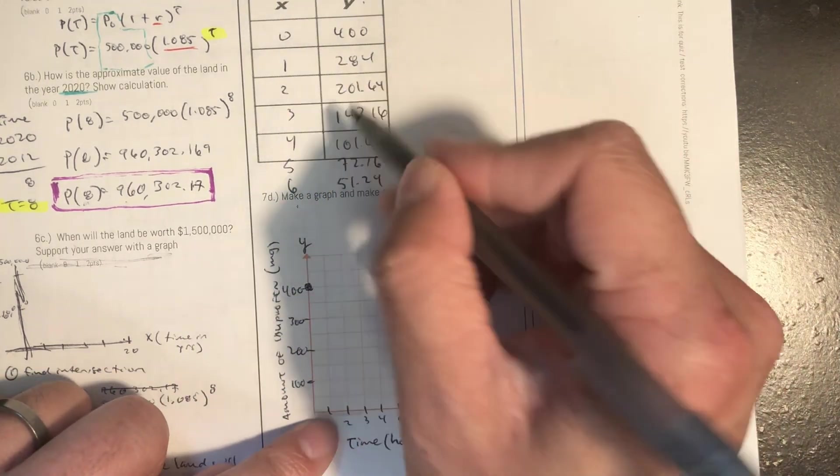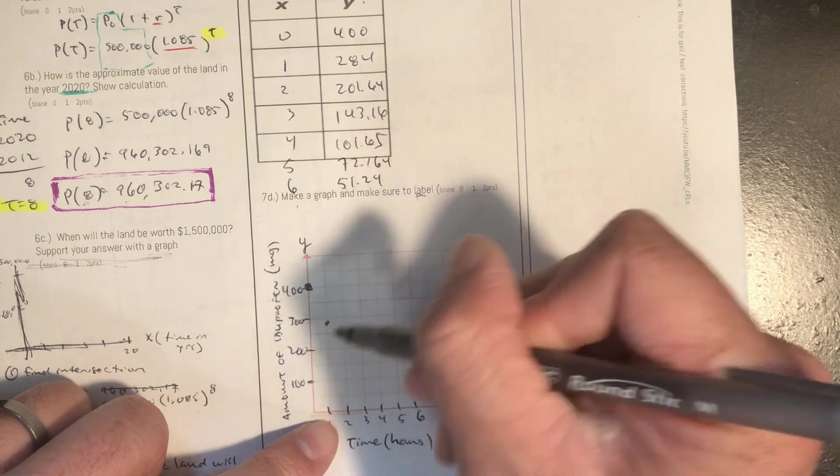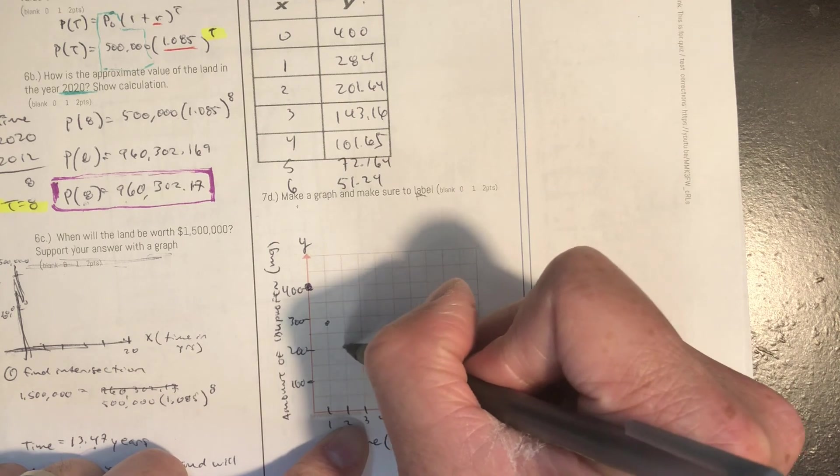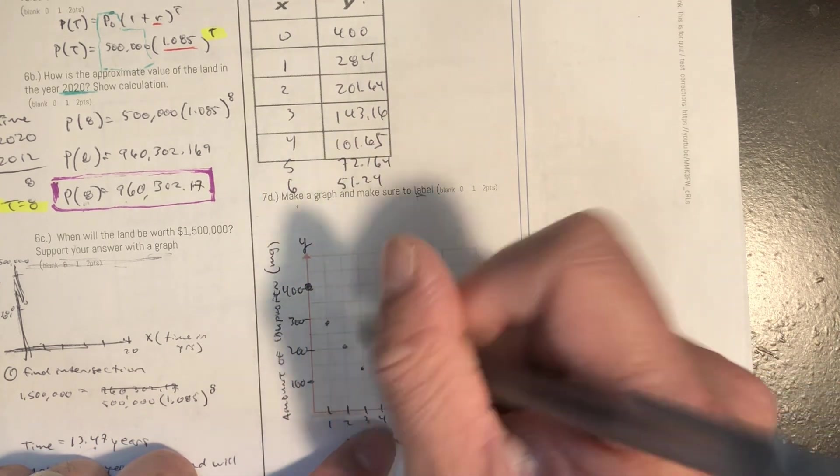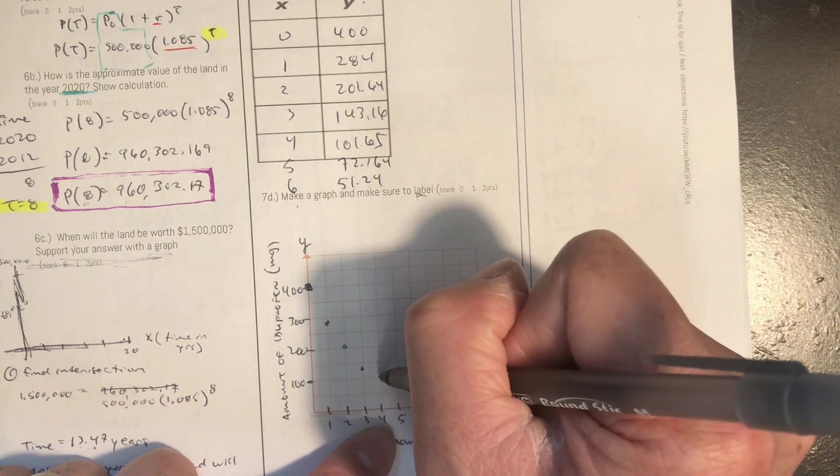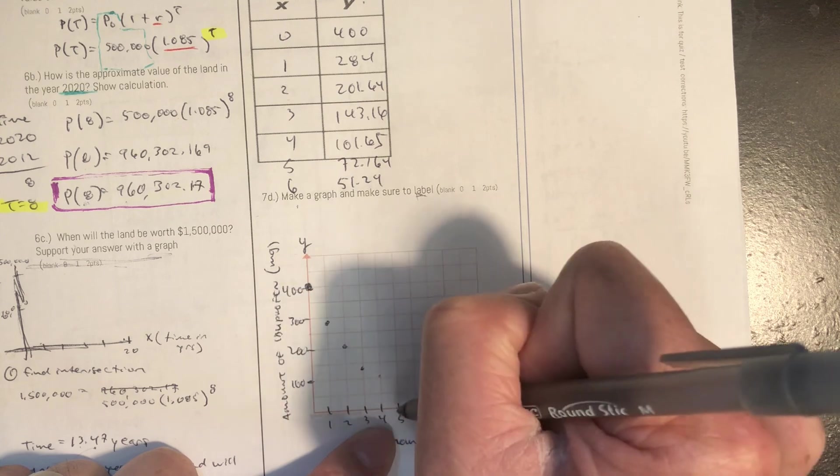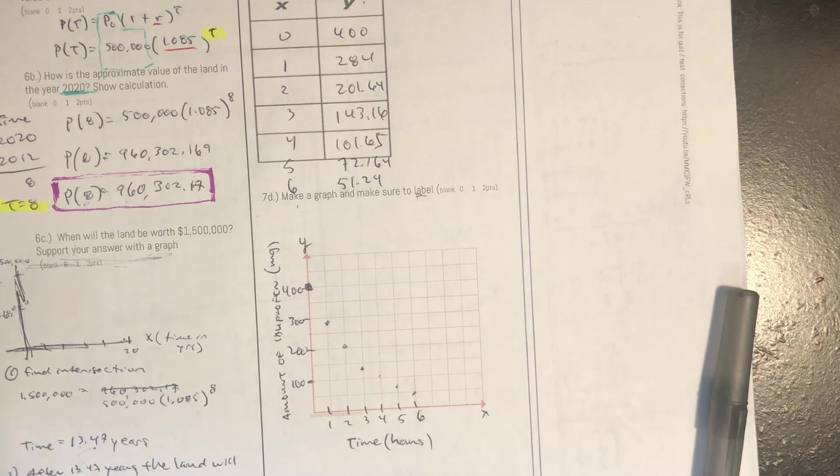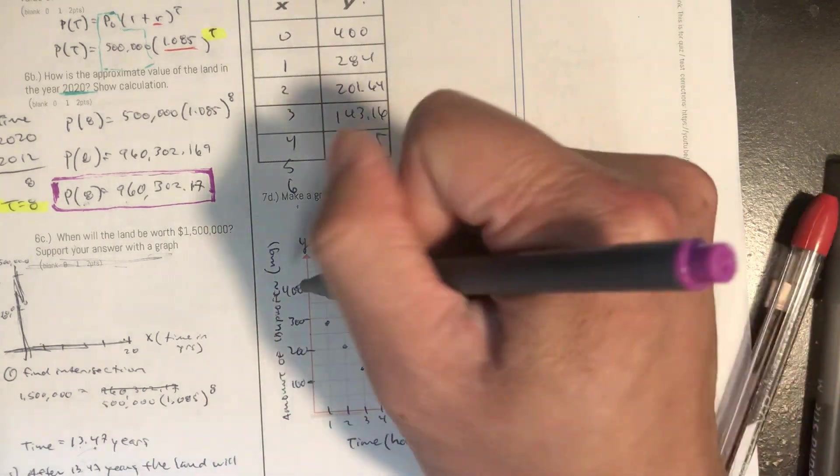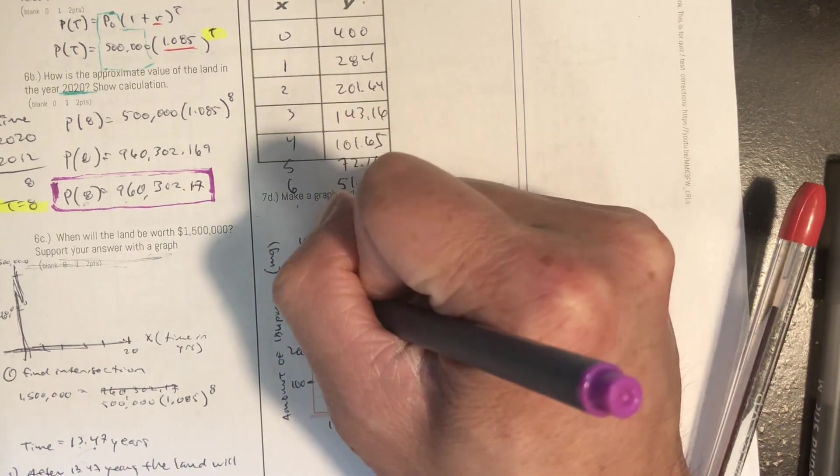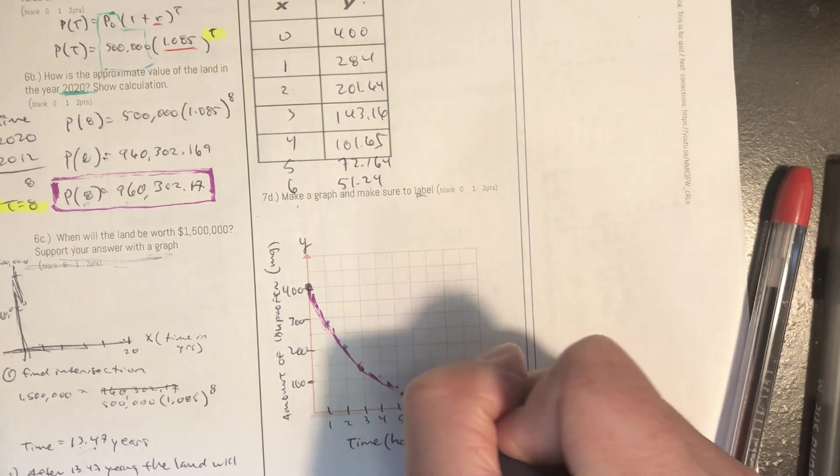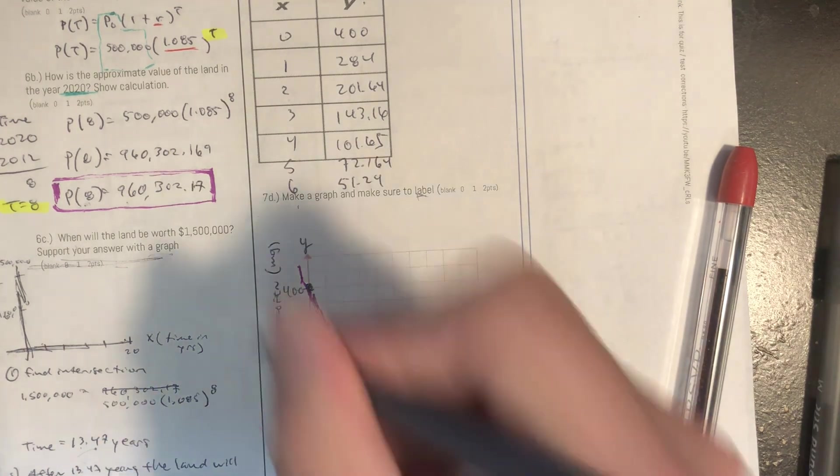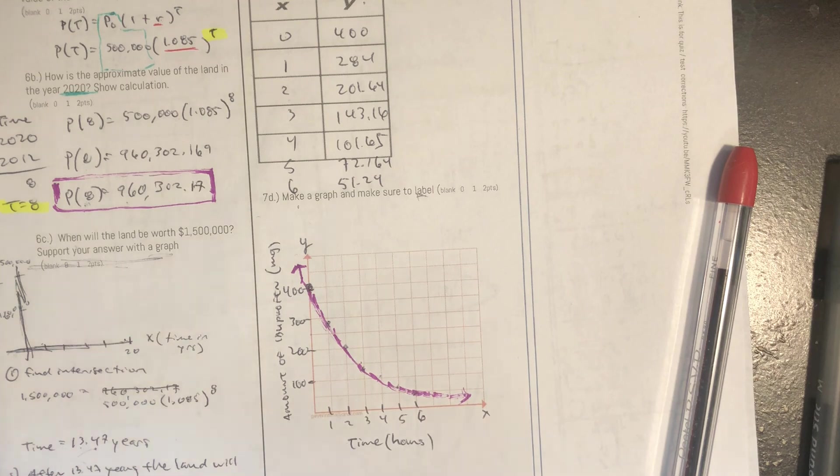So we have at 0, 400. 1 at 284. Remember, those are 50s. 2 and 200. 3 and 143. 4 and 101. 5, 72, and then 6, maybe around 50. So let's go ahead and sketch this. Should be curved. And there you go.